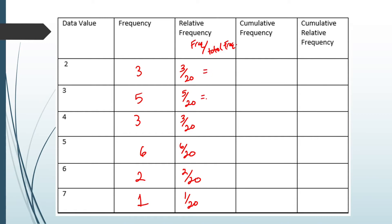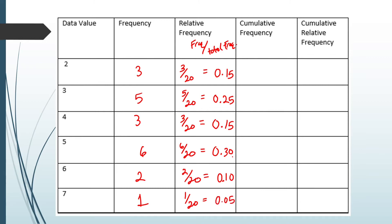We can also convert each of these values into a decimal using a calculator. 3 divided by 20 is 0.15, 5 divided by 20 is 0.25, 3 divided by 20 is 0.15, 6 divided by 20 is 0.30, 2 divided by 20 is 0.10, and 1 divided by 20 is 0.05. That completes the relative frequency column. We can check our work by adding all these values — the total should be 1.